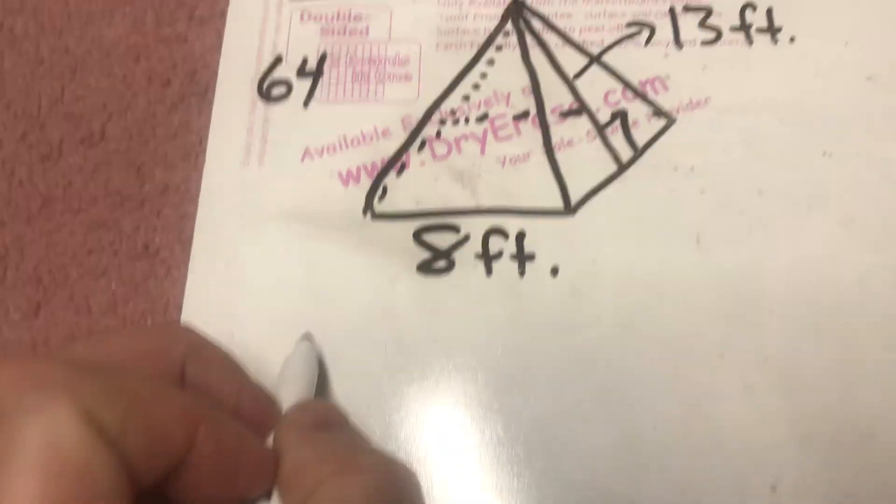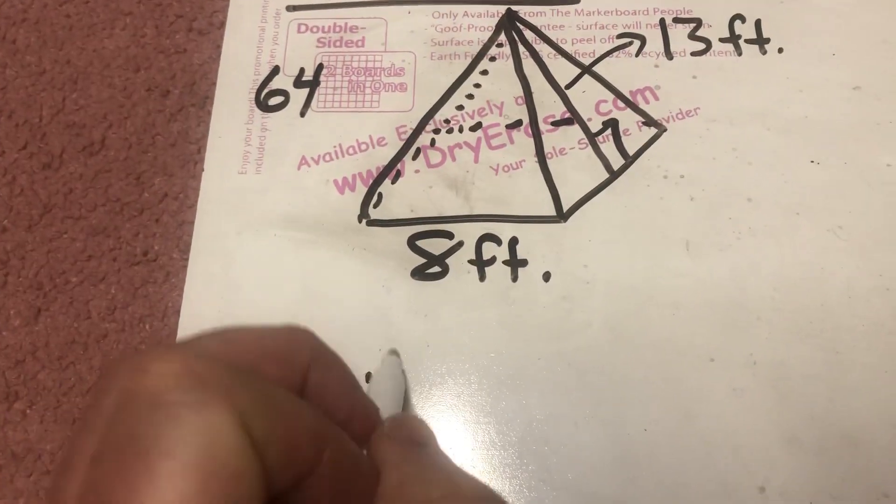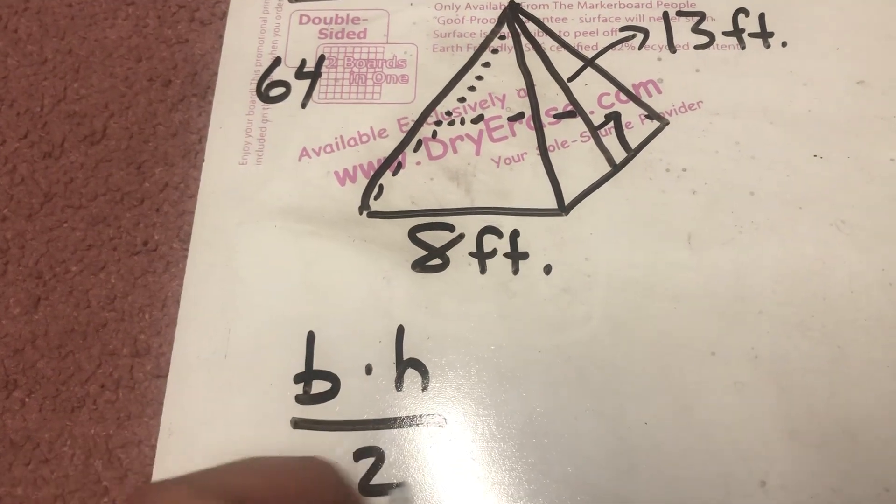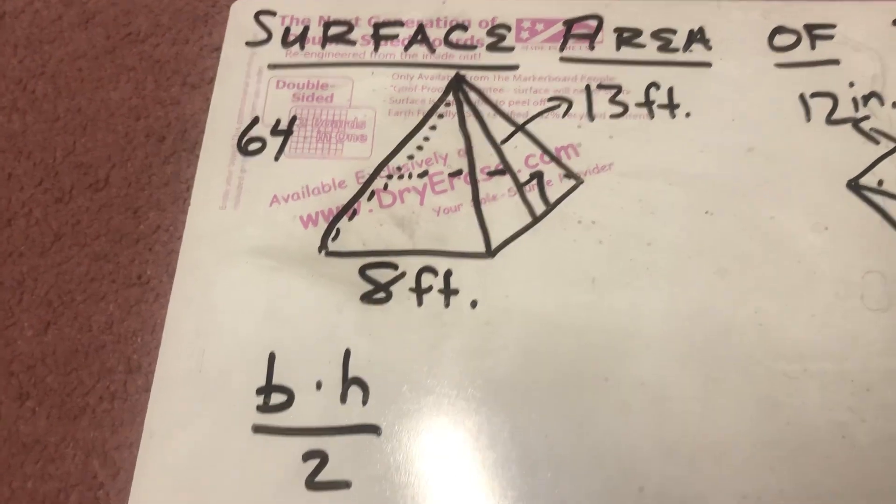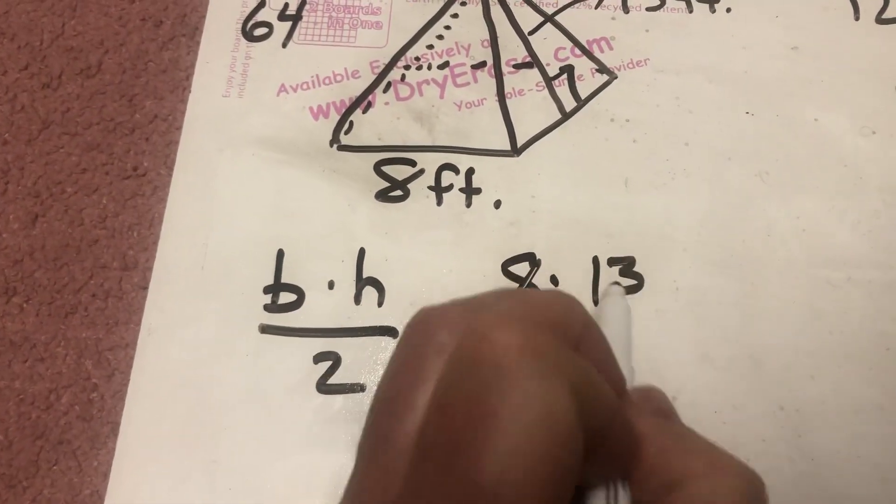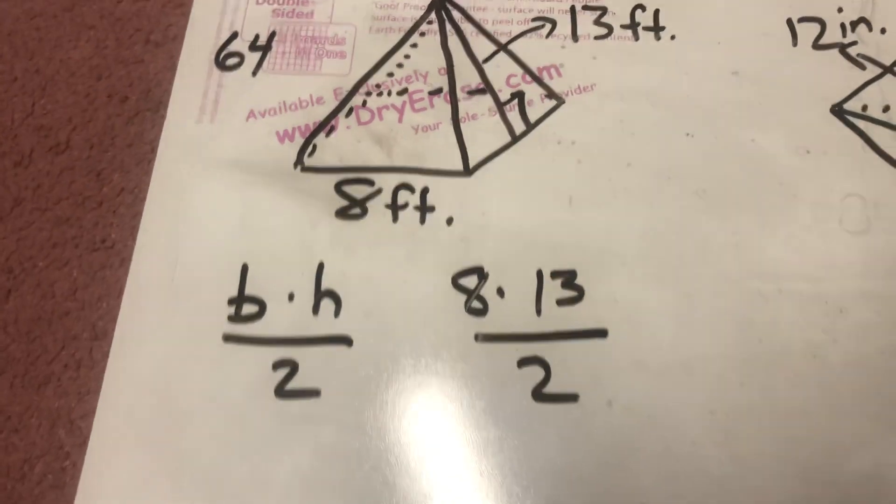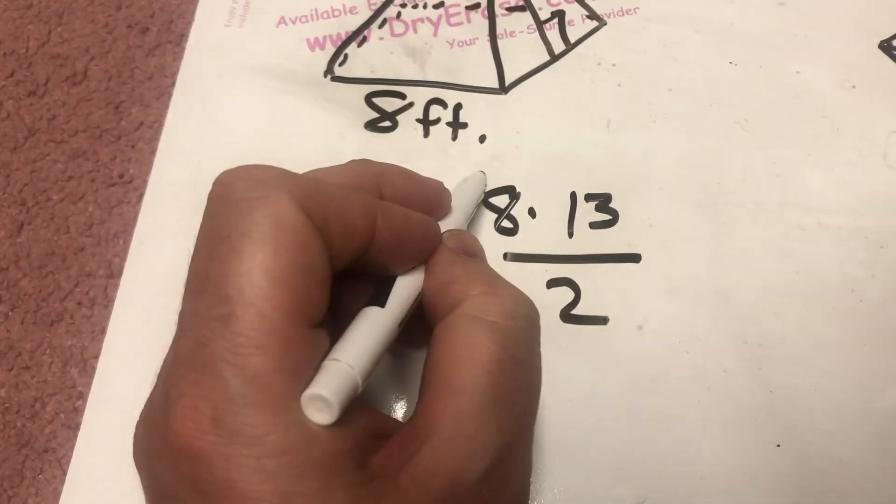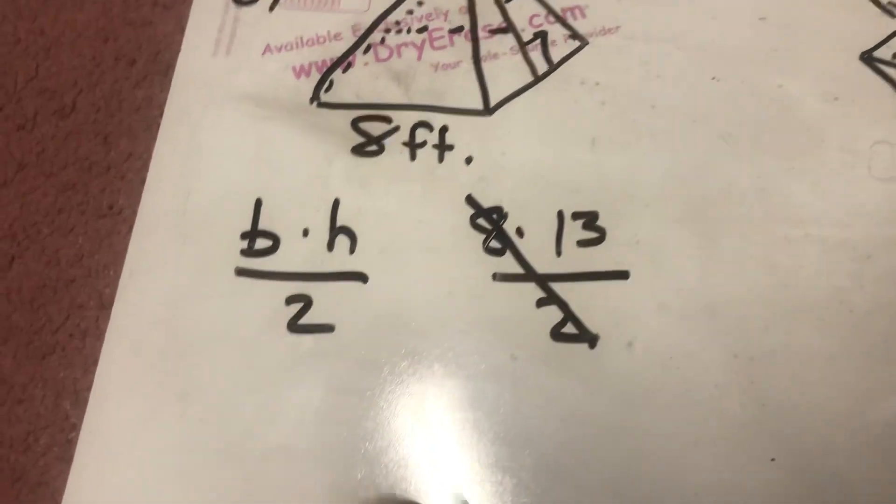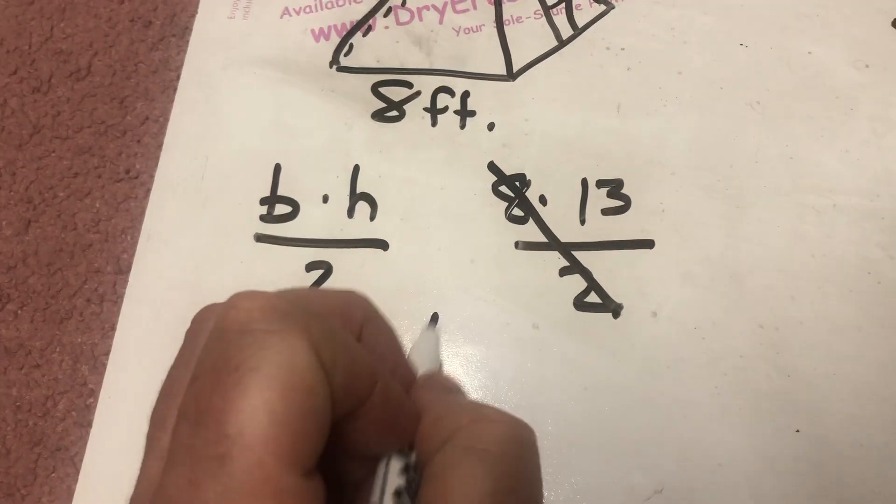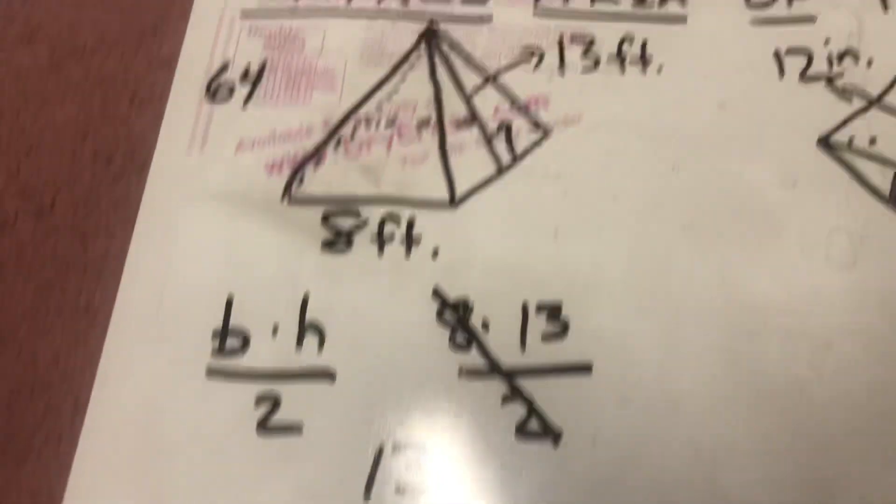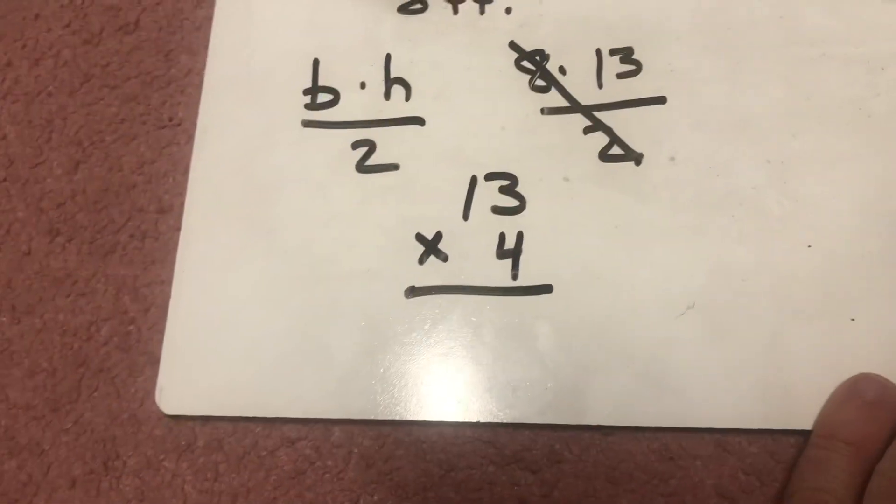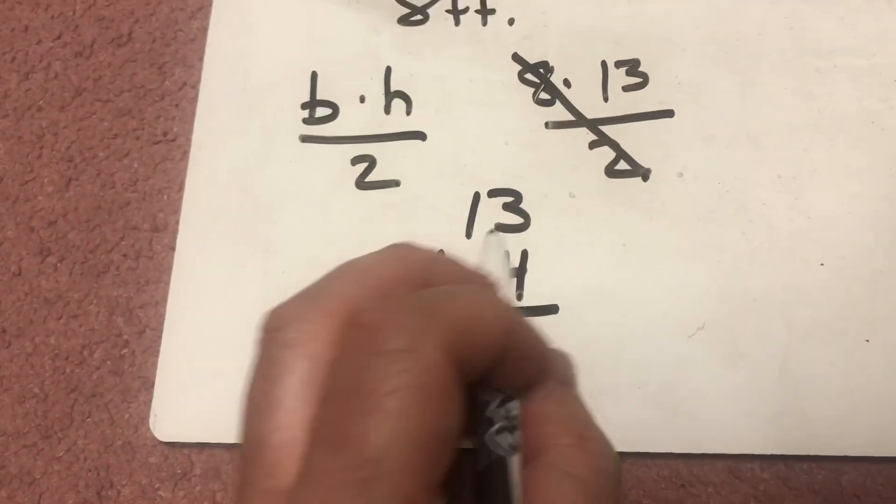Now, remember the formula for area of a triangle is base times height divided by 2. In this case, that's going to be 8 times 13, and divide that by 2. And I'm going to make it a little bit easier in the sense that I'm going to do the 8 divided by 2 first, which means that I'm just left with 13 times 4, because 8 divided by 2 is 4. So, I'm going to do 13 times 4.